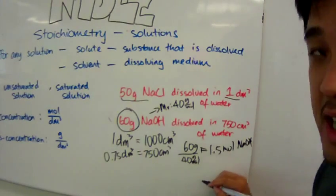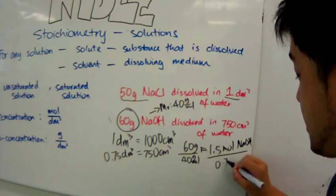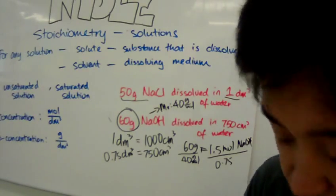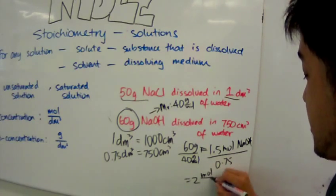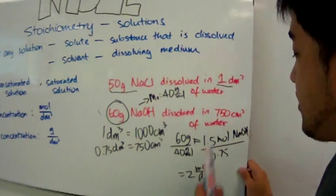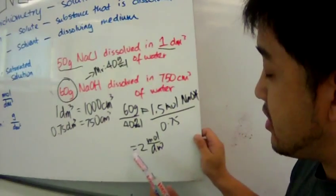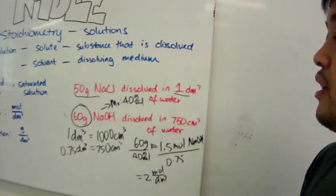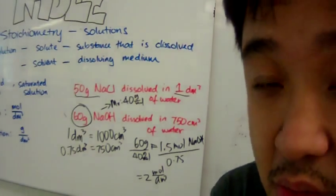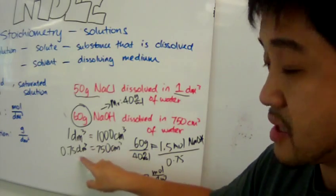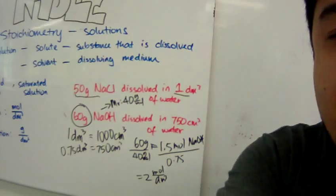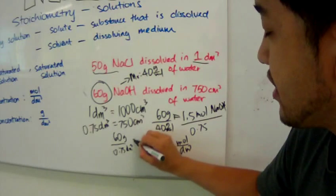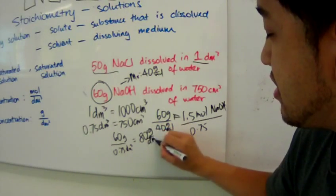To calculate the concentration, take 1.5 divided by 0.75, which equals 2. So dissolving 60 grams of sodium hydroxide in 750 cubic centimetres of water gives a concentration of 2 moles per cubic decimetre. For the mass concentration, take 60 divided by 0.75 cubic decimetres, which gives a mass concentration of 80 grams per cubic decimetre.